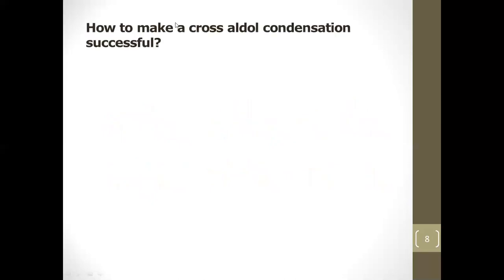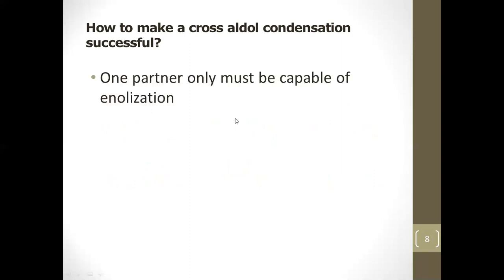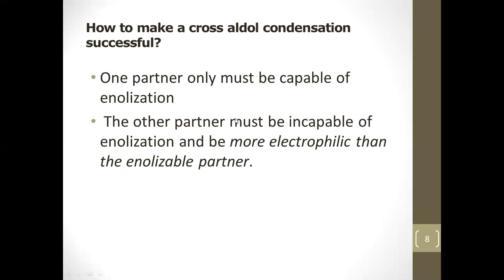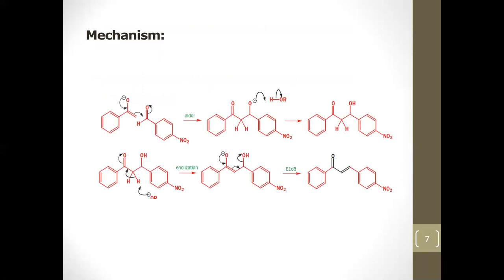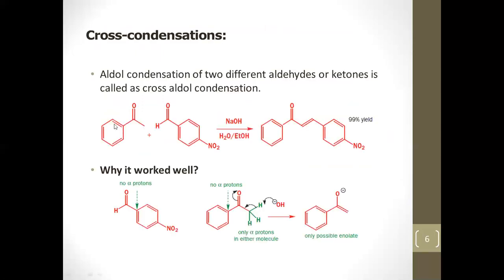How do you make a cross aldol condensation successful? There are two key parameters: first, only one partner must be capable of enolization; second, the other partner must be incapable of enolization and must be more electrophilic than the enolizable partner.